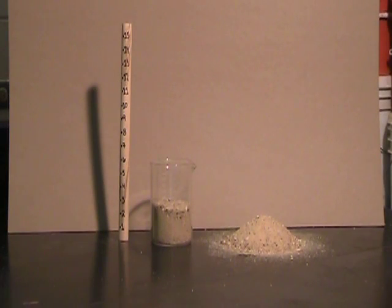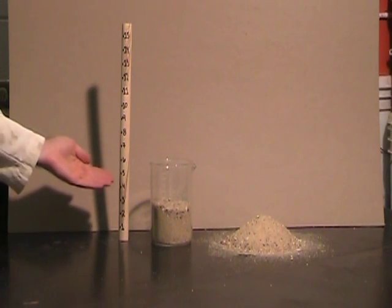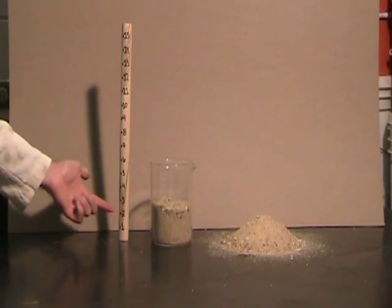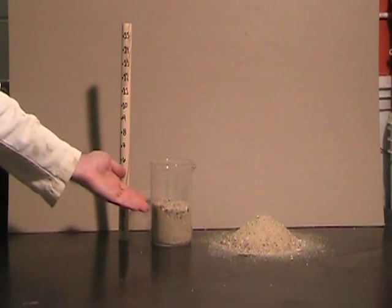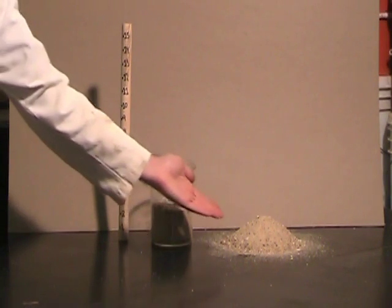This video demonstrates the effect of confinement on strength of sands. Materials needed for this experiment are a rod labeled at 1 inch intervals, sand in a beaker, and sand laid out on the table.